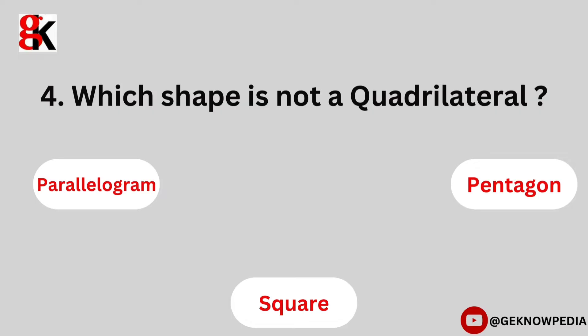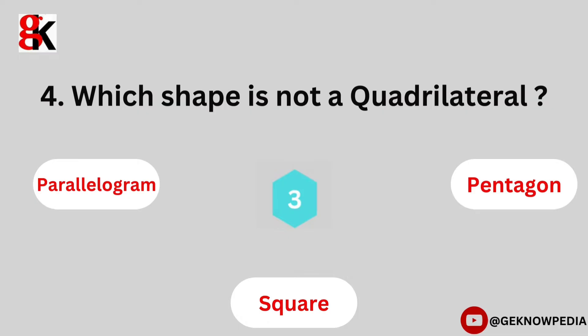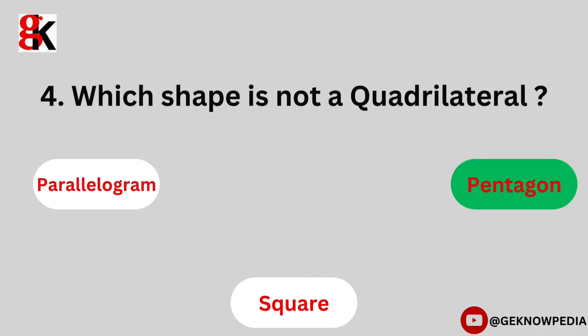Fourth question. Which shape is not a quadrilateral? Parallelogram, pentagon, square. The correct answer is pentagon.